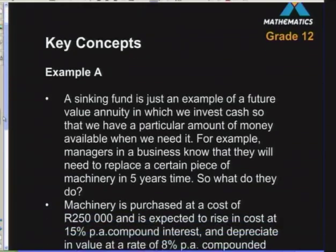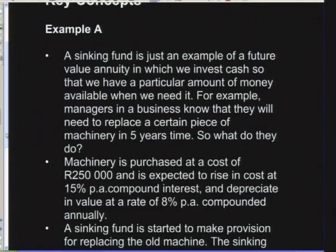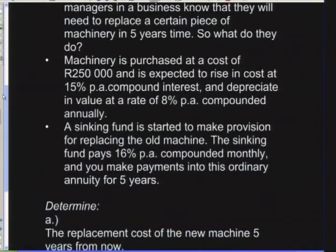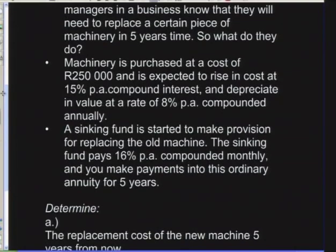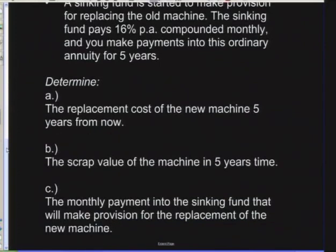A sinking fund is an example of a future value annuity in which we invest cash to have a particular amount available when we need it. For example: machinery is purchased for R250,000. It is expected to rise in cost at 15% per annum compounded, but it also depreciates at 8% per annum compounded annually. A sinking fund is started, paying 16% per annum compounded monthly, with payments made for five years. The first question is: what is the replacement cost of the new machine five years from now?